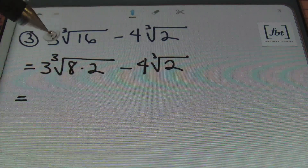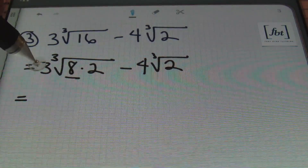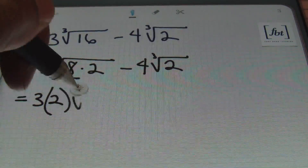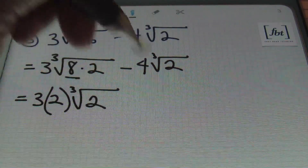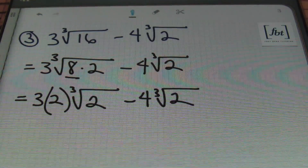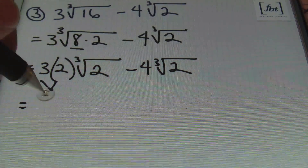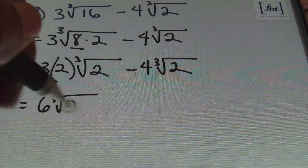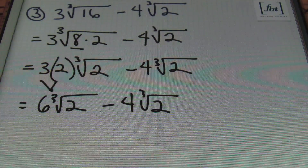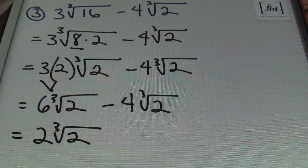The cube root of 8 is 2 — since 2 times 2 times 2 equals 8. So the coefficient of 3 multiplies the result of the cube root of 8, which is 2, leaving me with the cube root of 2 minus 4 times the cube root of 2. Then multiplying 3 times 2 gives me 6 times the cube root of 2 minus 4 times the cube root of 2. Subtracting 6 minus 4 gives me 2 times the cube root of 2.